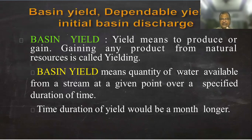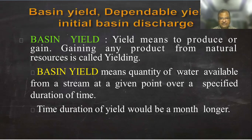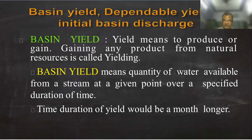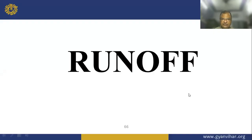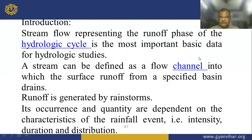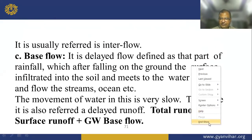Basin yield and initial basin discharge: basin yield means the quantity of water available from the stream at a given point over a given time duration. Yield would be over a month or longer, and this is the formula for this. So you have read in detail about infiltration and runoff.